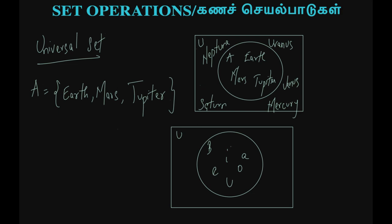In the alphabets, the vowels are in Set B. So the Universal Set is all the alphabets in English — all 26 letters: B, C, D, F, G, H, J, K, L, M, and so on. The Universal Set is all the alphabets.